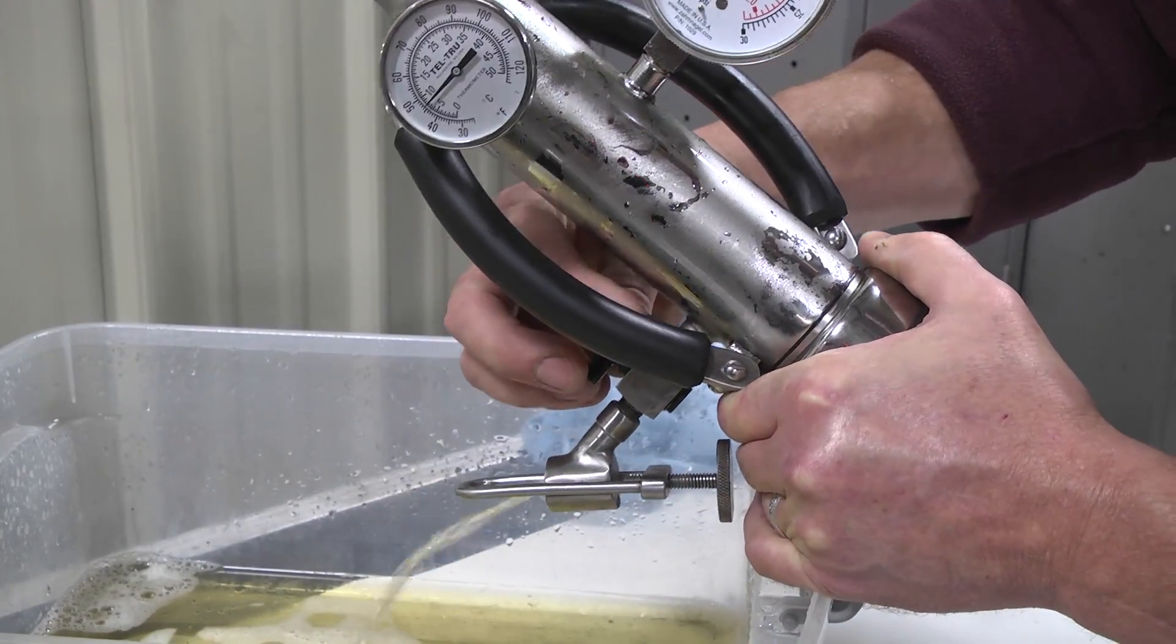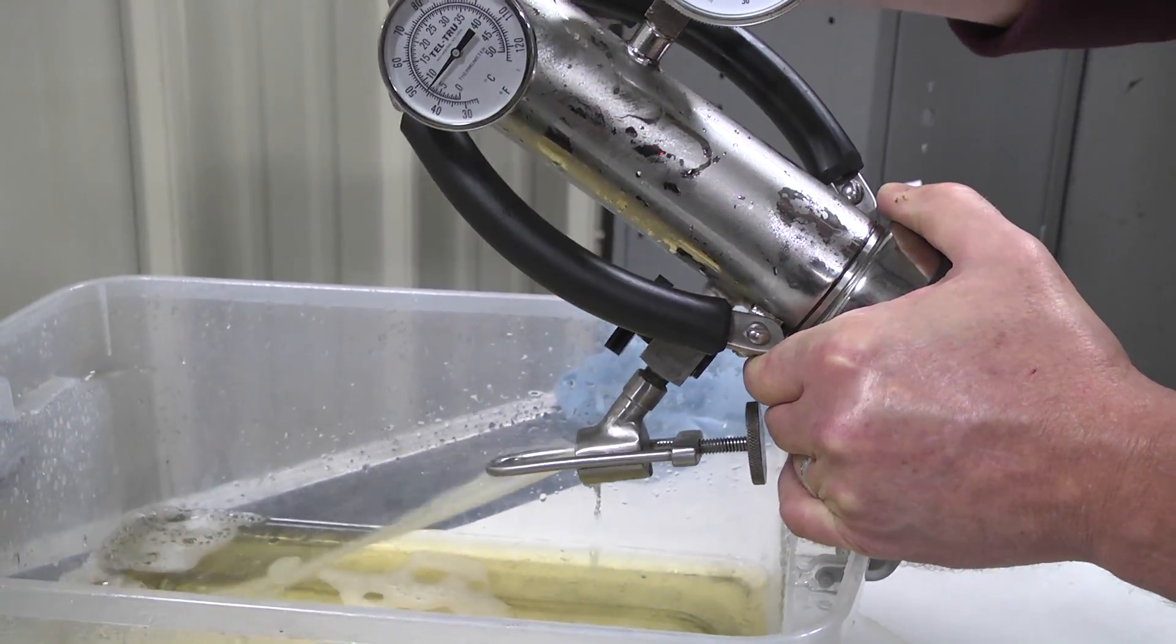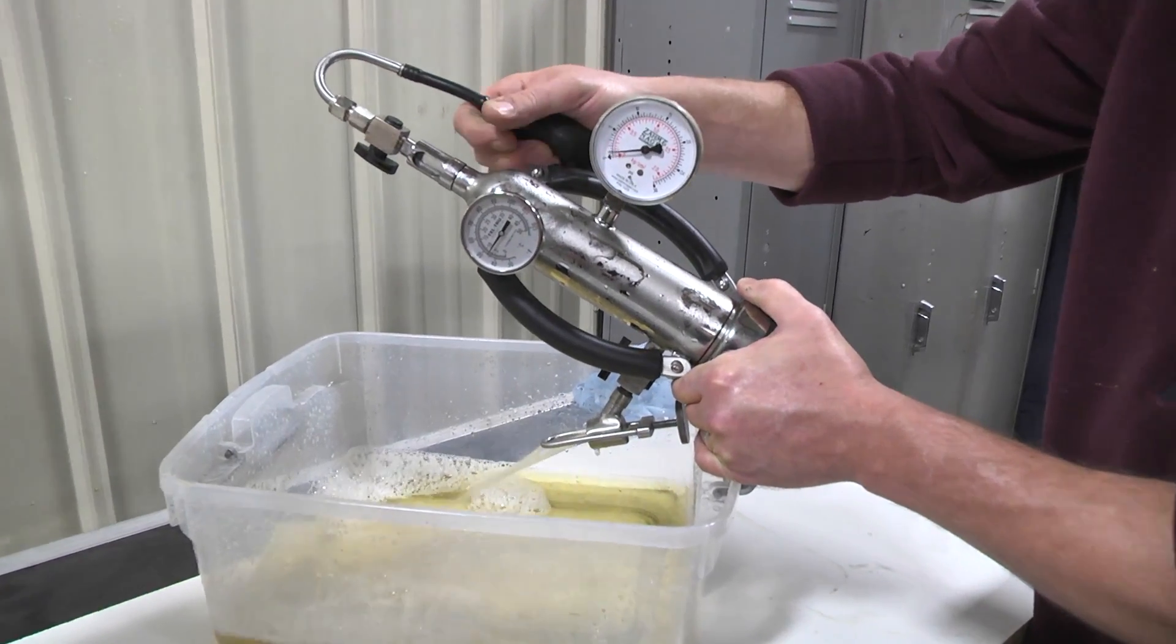After the test has been completed, open both inlet and outlet valves and blow out the beer sample with pressure from the aspirator.